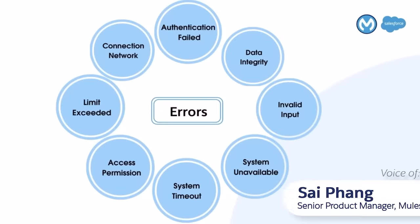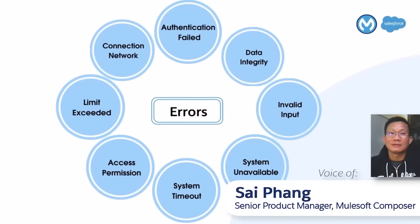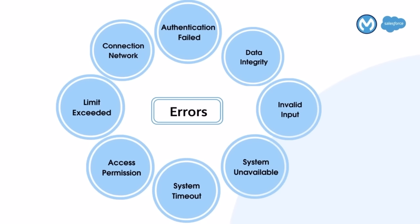As with any process, the unexpected sometimes occurs. It may be due to network disruption, systems becoming unresponsive, or data integrity issues — there could be many others. Now you can better handle errors in the Composer flow and further automate your process.